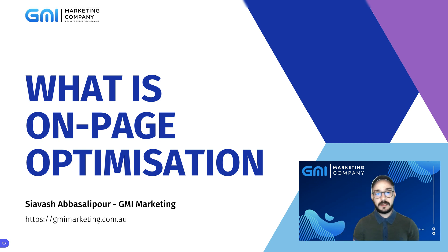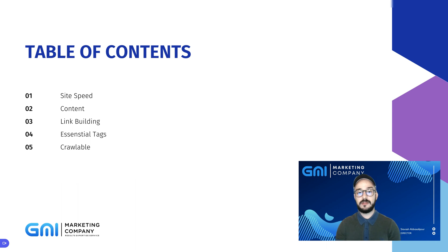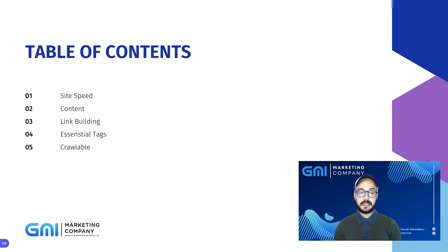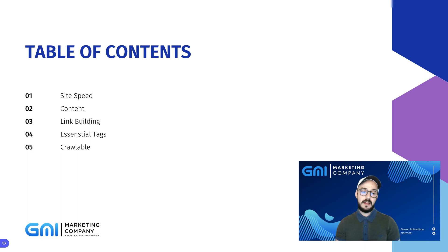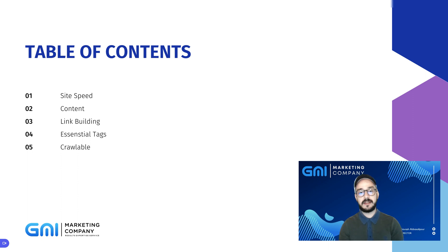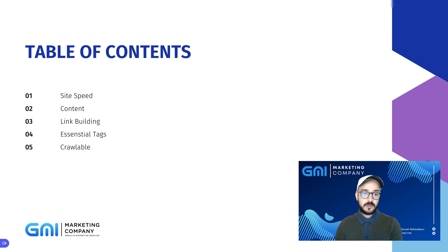So what we're going to cover is: site speed, which is super important, and there are a ton of tools you can use to figure that out; content; link building; essential tags; and lastly crawlability. It's not going to be a very long video, so if you stick to the end you'll see an example of how to rank a simple blog post on the first page of Google. Let's start with site speed.